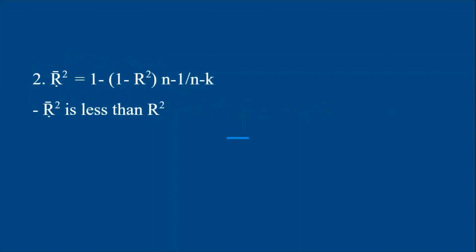Next is the adjusted R-square. The formula for adjusted R-square is 1 minus (1 minus R-square) times (n minus 1) divided by (n minus k), where R-square is the usual coefficient of determination, n is the number of observations, and k is the number of parameters. The value of adjusted R-square is less than or equal to R-square.